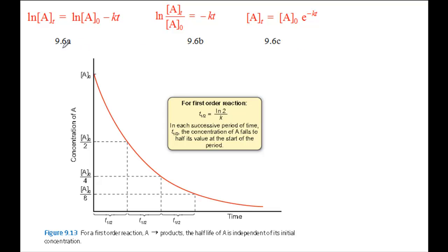Equation 9.6a is useful because a plot of log of the concentration of A against time is a straight line, y equals mx plus c, and the gradient of the line is minus k, where k is the rate constant of the reaction.